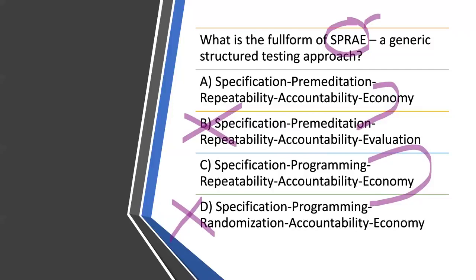Comparing A and C, the difference is between 'premeditation' and 'programming,' which appeared equally, so at this point it may come down to luck — but you've improved your odds from 25% to 50%. The correct answer is: SPRAY stands for Specification, Premeditation, Repeatability, Accountability, and Economy.